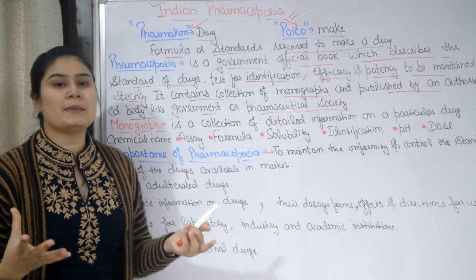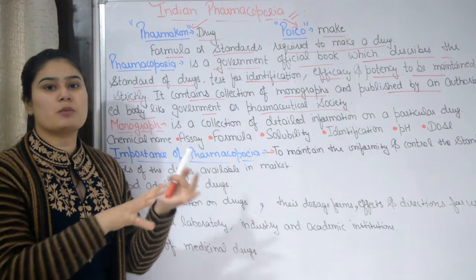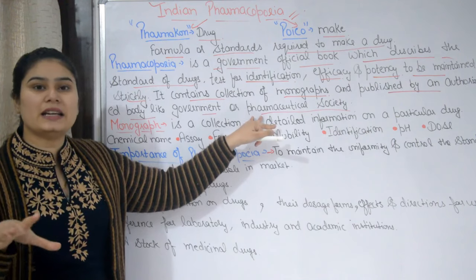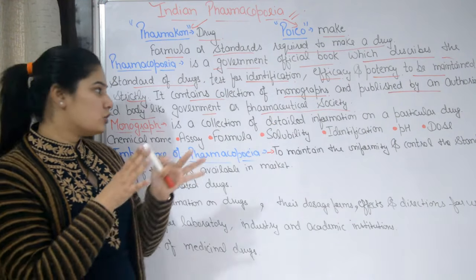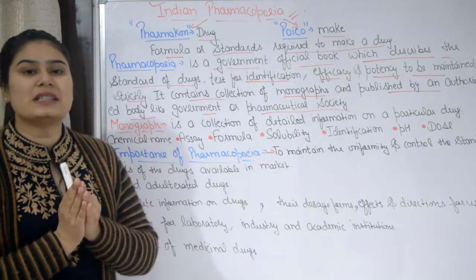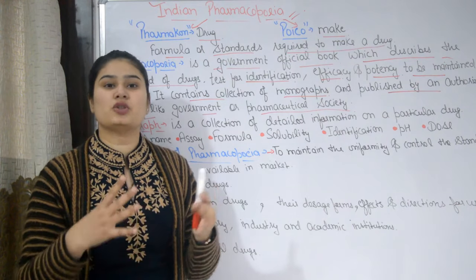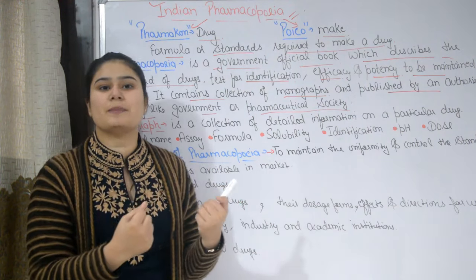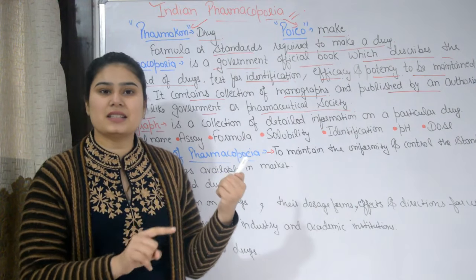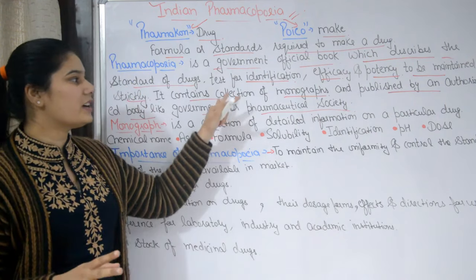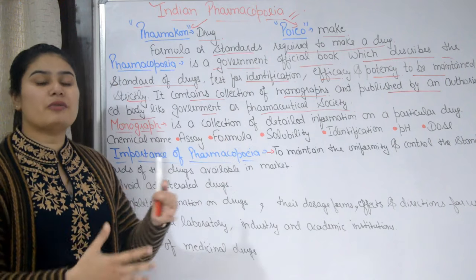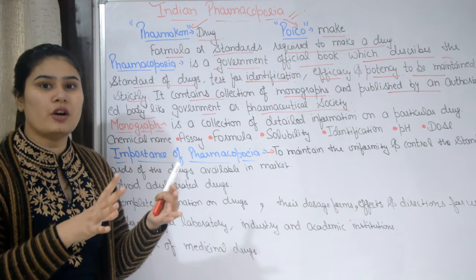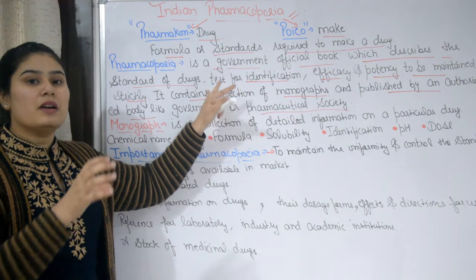Pharmacopoeia is not made by any single company. It is published by an authorized body such as the government or pharmaceutical society. Using the cake analogy — just like we follow a recipe to make a chocolate cake, similarly if any drug needs to be made or practiced by doctors, pharmacists, or nurses, the full knowledge of that drug will be present in pharmacopoeia.